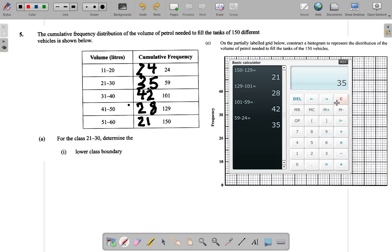Could check and see if everything adds up again. It would be 24 plus 35 plus 42 plus 28 plus 21 equals 150. That's 150.